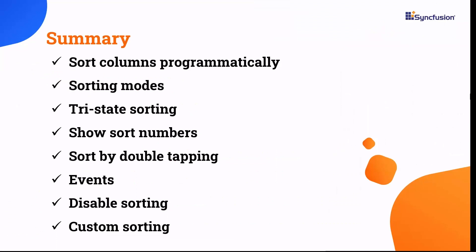In this video, I have shown you how to sort columns programmatically, the different sorting modes, tri-state sorting, displaying sort numbers, sort by double tapping, and sorting events. Also explained how to disable sorting and custom sorting. If you want to see a working example, you can download it from the GitHub link provided in the video's description. I have also included a link in the description where you can check if you qualify for our Community License, which gives you a free license key for our entire .NET MAUI control suite. If you found this video useful, don't forget to click the like button and subscribe to our channel to watch more videos like this. Thanks for watching.